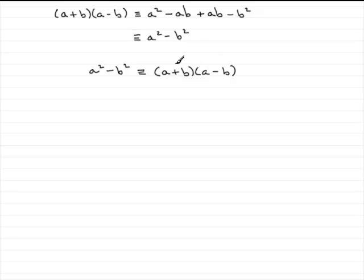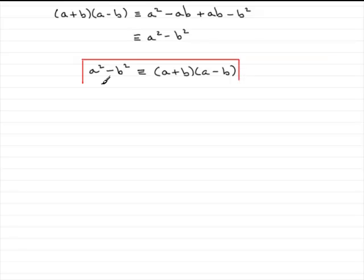What we've got here is one term consisting of two factors. First factor, a plus b. The second factor, a minus b. So we've factorized a squared minus b squared. This is a result that I would encourage you to learn, and it is called the difference of two squares.